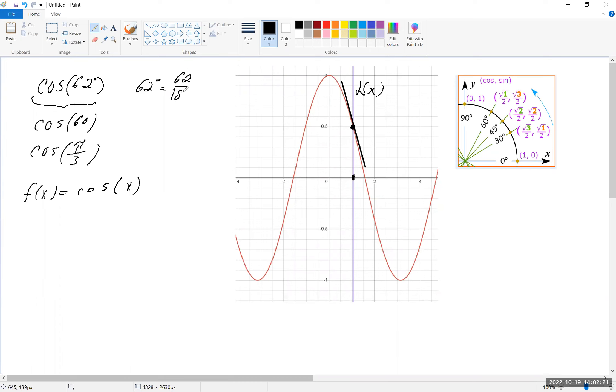So we can do that now. 62 over 180 times pi is a formula for converting it to radians. And so we'll use that at the point that we need to.